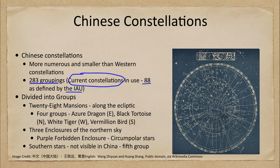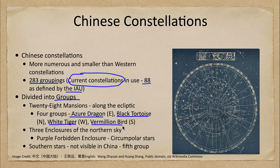The Chinese divided these into five groups. Four of those — identified by the early Chinese — were the azure dragon in the east, the black tortoise in the north, the white tiger in the west, and the vermilion bird in the south.